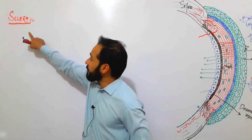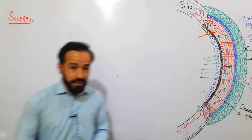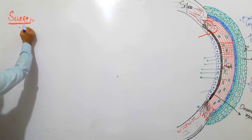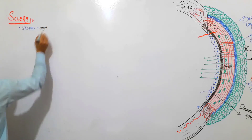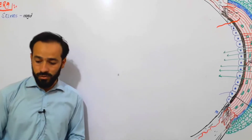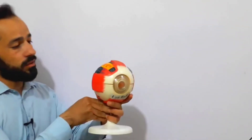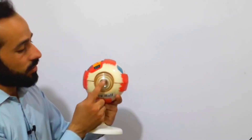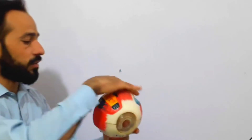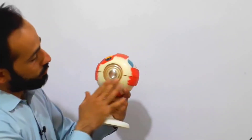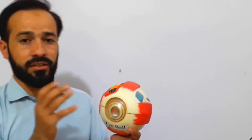The word sclera is derived from the word 'scleros', which means hard. So we say that the hardest part of the eye is called the sclera. As we can see on this model, the extraocular muscles are attached here, and this is the cornea we discussed previously. This white external cover — the outer coat of the eye — is called the sclera. We also say that the 'white of the eye' is the sclera.